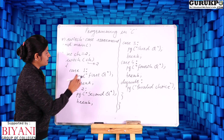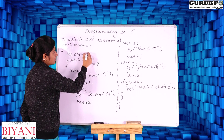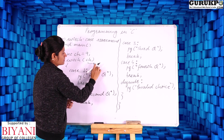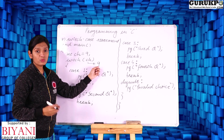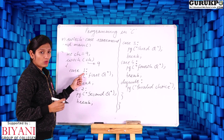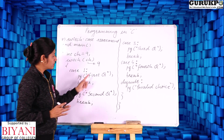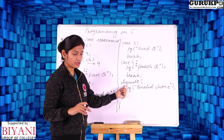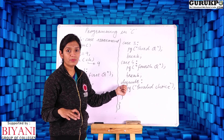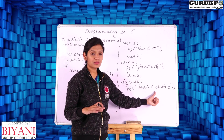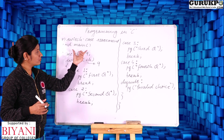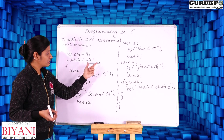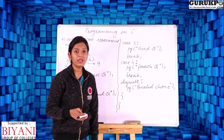Now let us change the value of ch to 9. This 9 is compared with each case: 9 equals 1 — no; 9 equals 2 — no; 9 equals 3 — no; 9 equals 4 — no. Since it does not match any case, we come to the default case and execute its statements. Here a printf gives the message 'invalid choice', since valid choices are 1 to 4 and we gave 9. This is how the default case works.